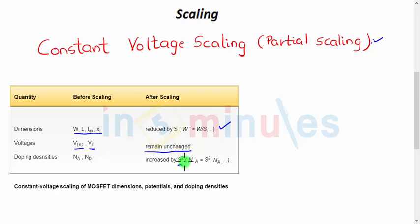Here there is another change as well. The doping density is going to be increased by s square, unlike constant field scaling where it is increased only by a factor of s. Again, this is to ensure the charge field relationship according to Poisson's equation.